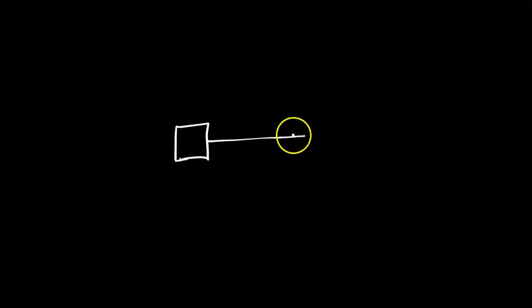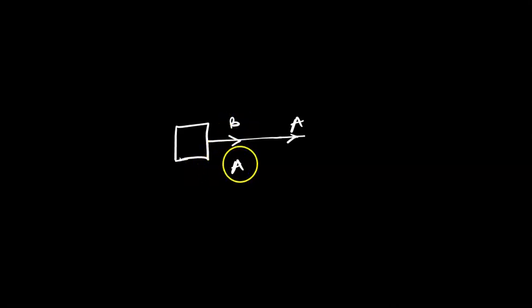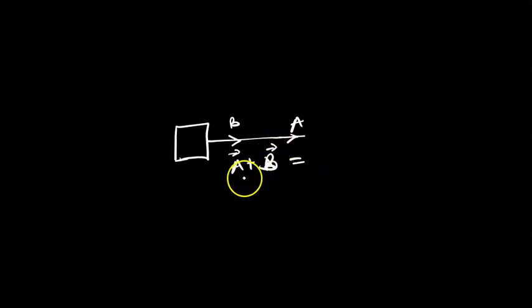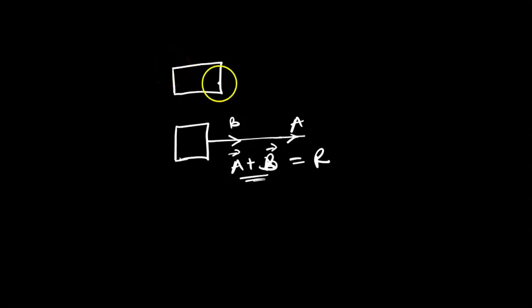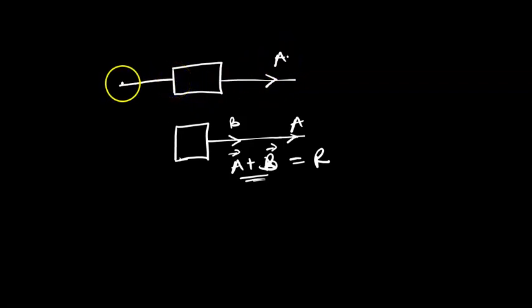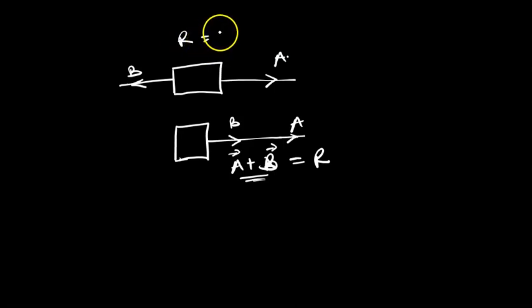If you have an object like a car and it's being pulled by two forces — force A and force B — if they're pulled in the same direction, force A plus force B are in the same direction and you simply add them together. Now if force A is being pulled to the right while force B pulls to the direct left, the resultant R becomes force A minus force B.